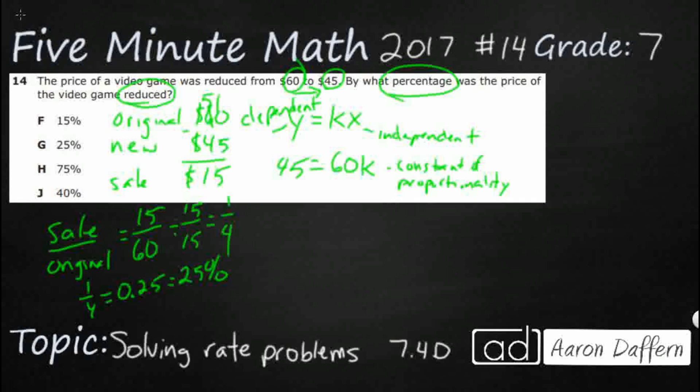So we started with 60, multiplied it by something, got it down to $45. So obviously, it's going to be less than 1 because we're making it smaller. How do we isolate that K? Well, we just divide both sides by 60. And what we ended up doing was just dividing both sides by our independent variable, X.